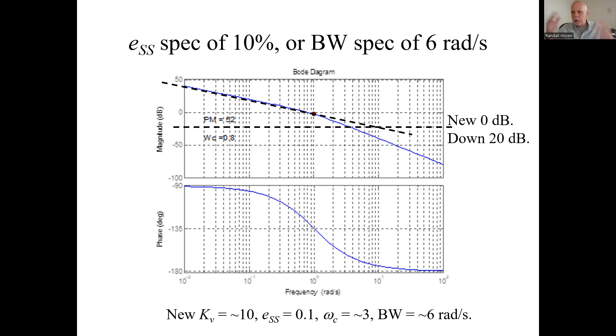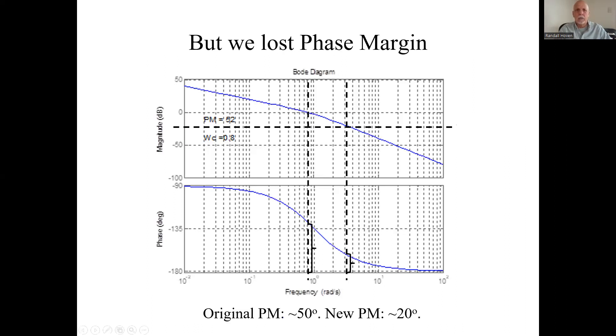Which means the new bandwidth is about six radians per second. We're looking at what happens if we just try proportional gain. All we do is change that gain from one to something else. In this case, we change it to 10 to meet a steady state error spec. What happened to phase margin?